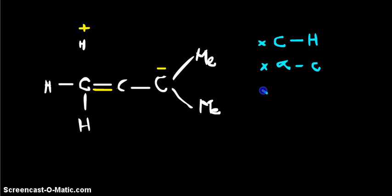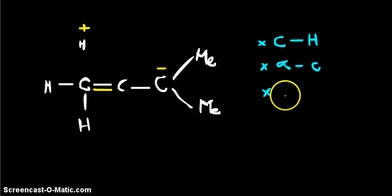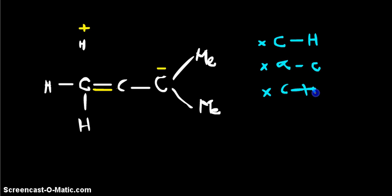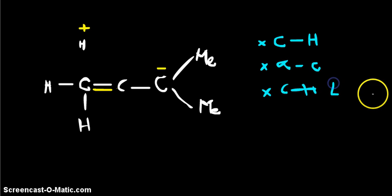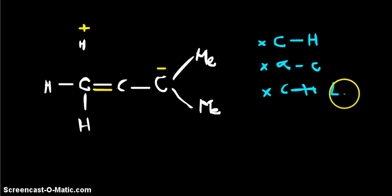Another factor that affects hyperconjugation is the bond angle — specifically the CH bond angle.